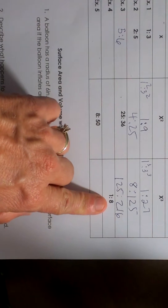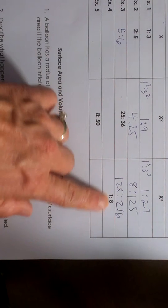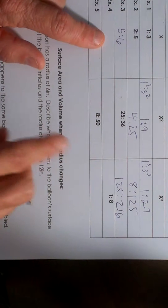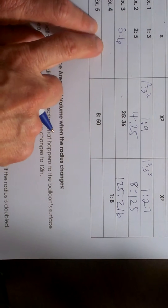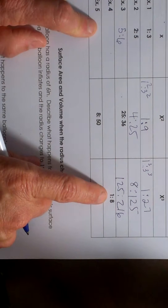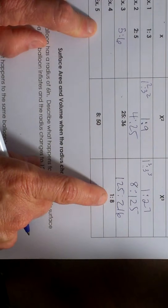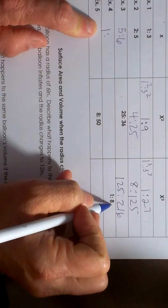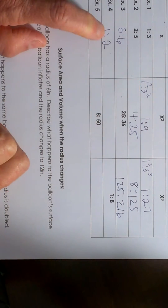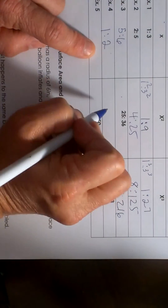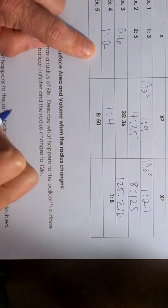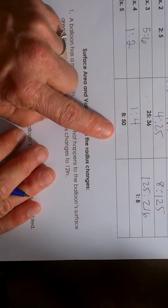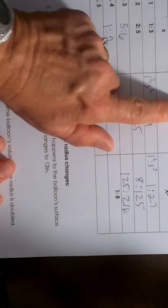What if we're given the ratio of the volume and have to figure out the area and the radius and diameters? We always go back to the linear relationship. Since this is volume, we have to take the cube roots. The cube root of one is one, and the cube root of eight is two. So it's a one to two linear relationship, which makes it a one to four area relationship.